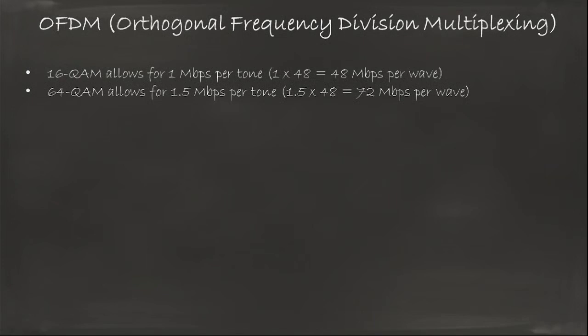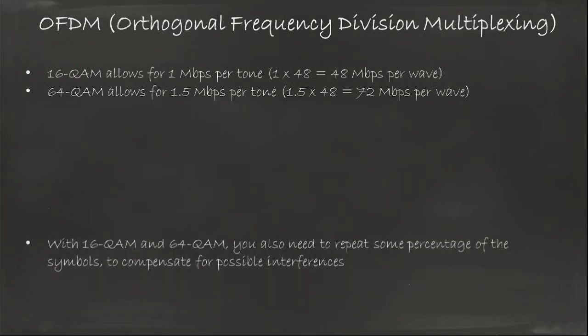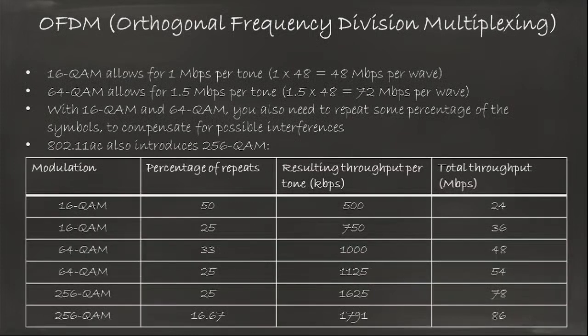But just like with the others, you need to repeat some of those to avoid some losses. So if you start repeating them, this is pretty much what you get. You get 16 QAM, 50% repeat, you can get 24 megabit per second. And if you go all the way up to 64 QAM with a 25% repeat, you get 54 megabit per second. And that's the speed you may have heard of in 802.11a and 802.11g. That has been the status quo for a long time. Then recently, in 802.11ac, the idea came to also use 256 QAM. So instead of having 64 targets, I have 256 targets. And that allows you to go even faster. But that's only, of course, if you use 802.11ac.